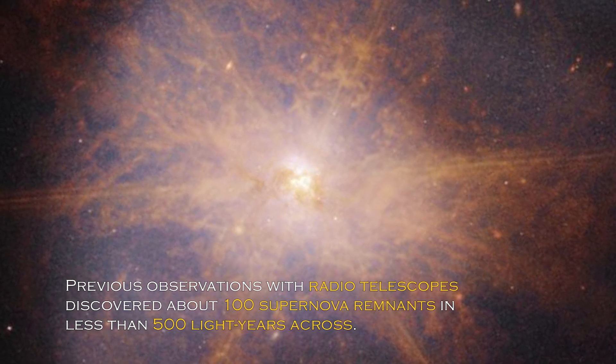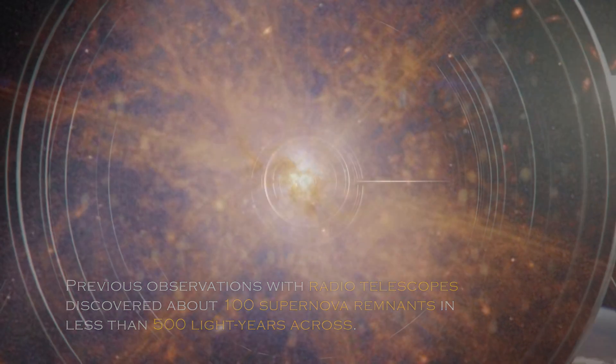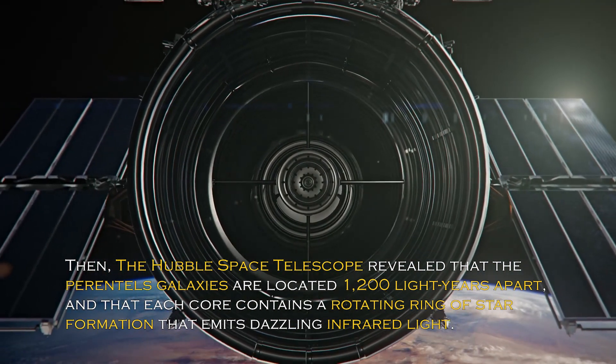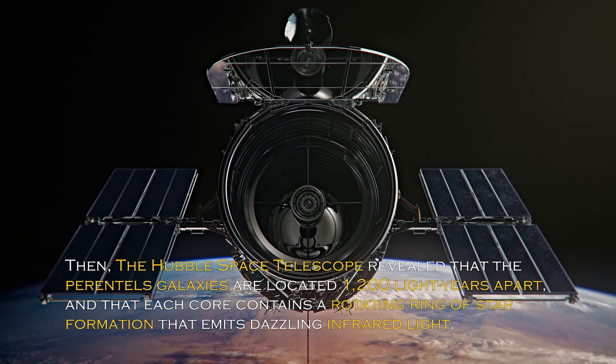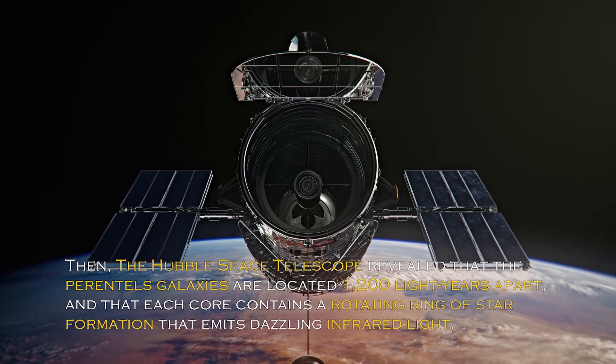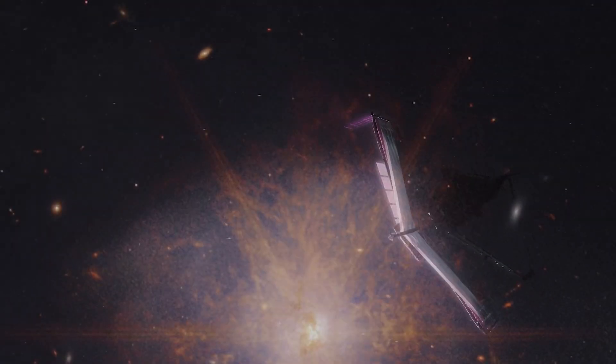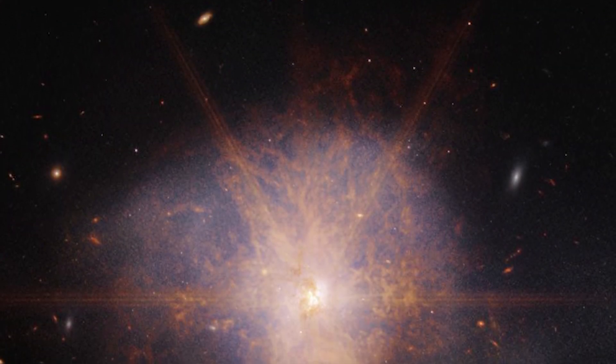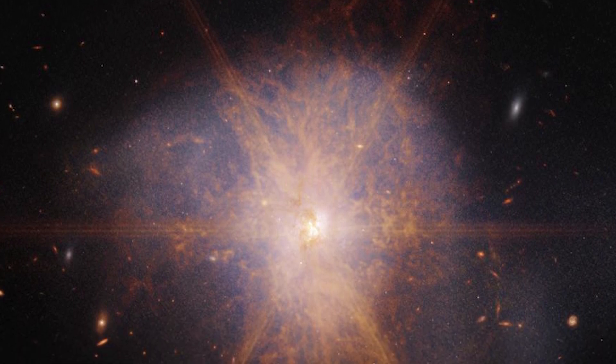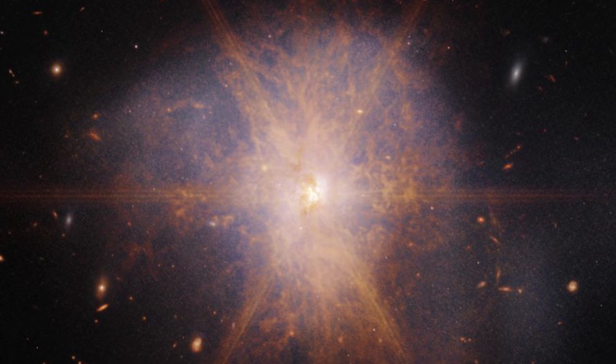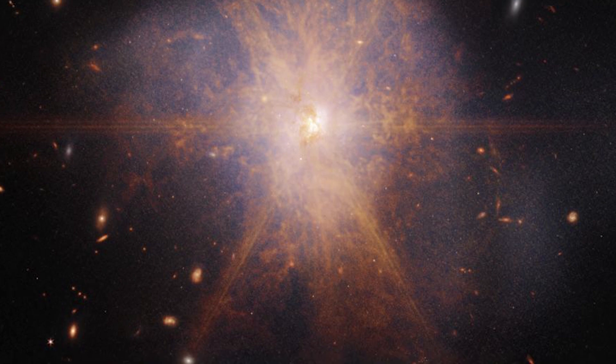Previous observations with radio telescope discovered about 100 supernova remnants in less than 500 light-years across. Then, the Hubble Space Telescope revealed that the parent galaxies are located 1,200 light-years apart, and that each core contains a rotating ring of star formation that emits dazzling infrared light. The latest views from the James Webb Space Telescope shows an impressive galactic merger of the two galaxies. This image also shows faint tidal tails extending from the outskirts of the merger, indicating the gravitational pull between the two galaxies. Finally, the reddish and orange streams and filaments represent scattered organic materials in ARP 220.